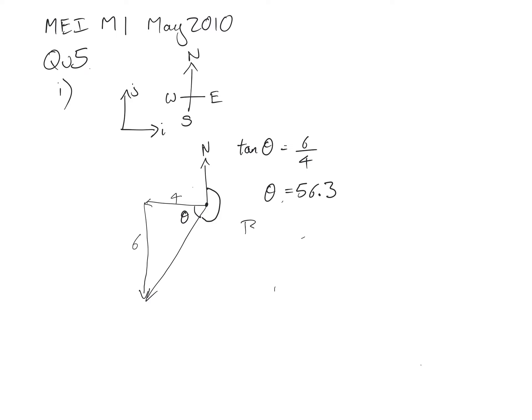Therefore the bearing of minus 4i minus 6j is 270 minus 56.3. There are a number of other ways of doing that, but it's 270 all the way around to there and then take off the 56.3 degrees. It is 213.7 degrees.